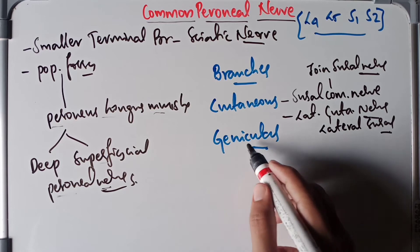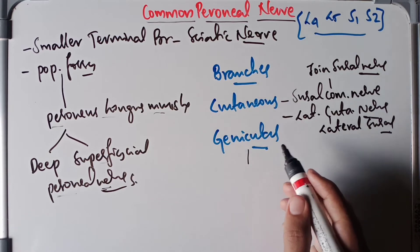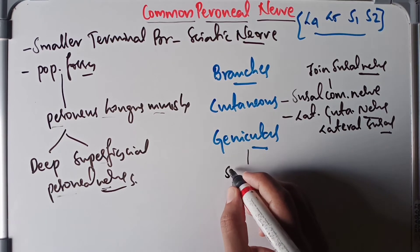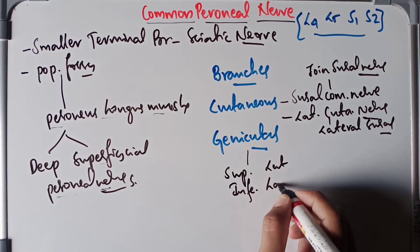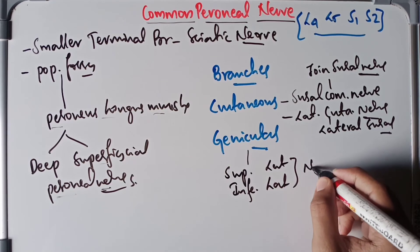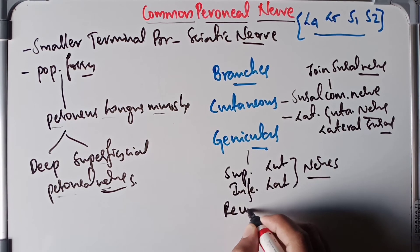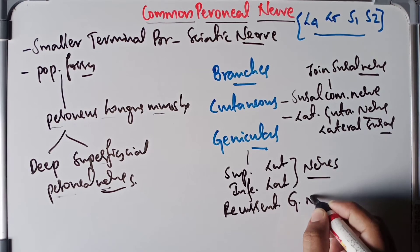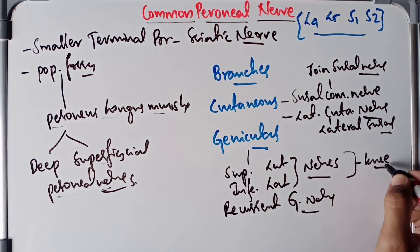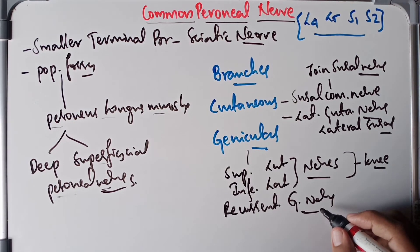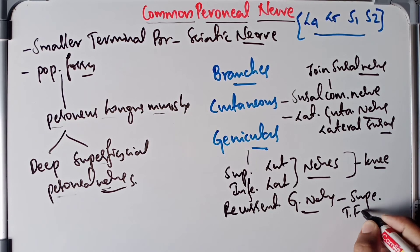Moving on to the genicular branches, the common peroneal nerve gives the superior lateral genicular nerve, the inferior lateral genicular nerve, and the recurrent genicular nerve. The superior lateral and inferior lateral genicular nerves supply the knee joint, while the recurrent genicular nerve supplies the superior tibiofibular joint.